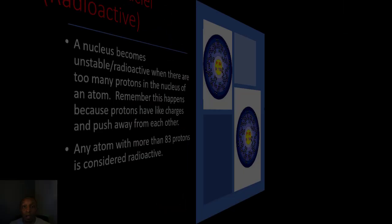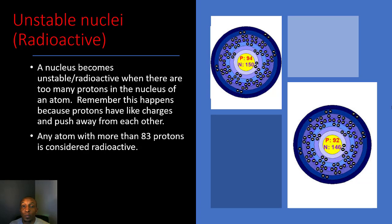Let's start off by understanding what an unstable nucleus is. A nucleus becomes unstable or radioactive when there are too many protons in the nucleus of an atom. This happens because protons have like charges and push away from each other, and any atom with more than 83 protons is considered to be radioactive.